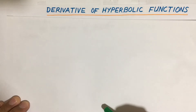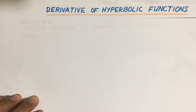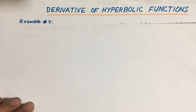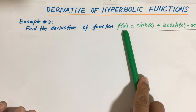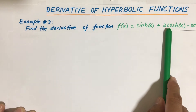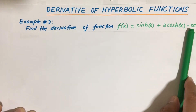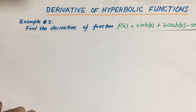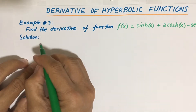Hello class, let's continue our discussion on the derivative of hyperbolic functions. Last time we solved example number one and two, so this time let's solve another example. Let's start with example number three: find the derivative of the function f(x) equal to the hyperbolic sine of x plus two times the hyperbolic cosine of x minus the hyperbolic secant of x.